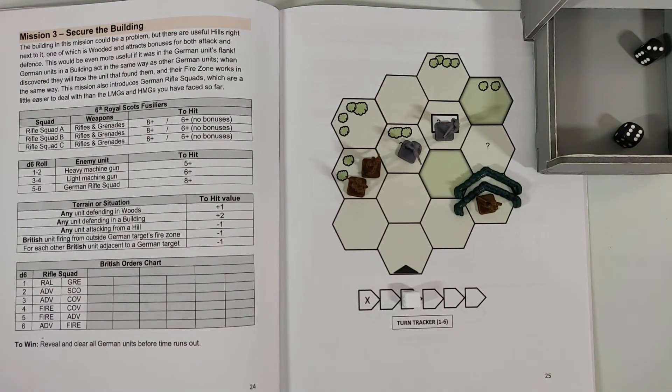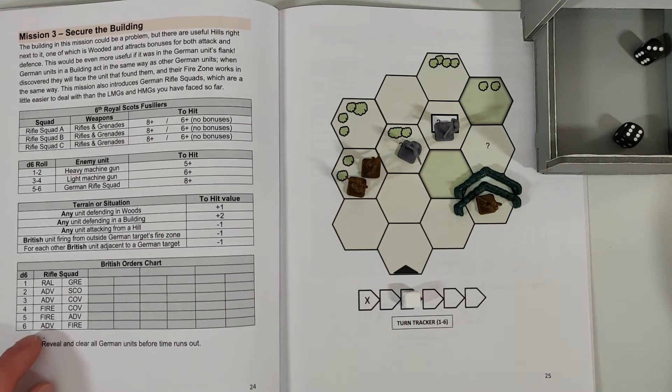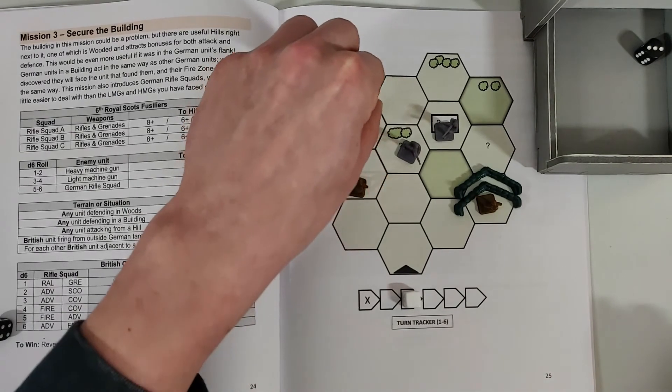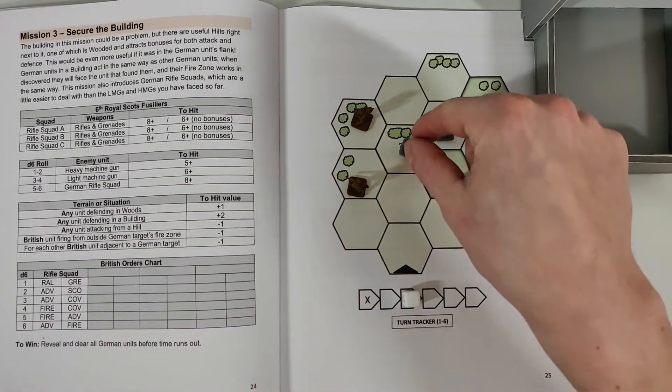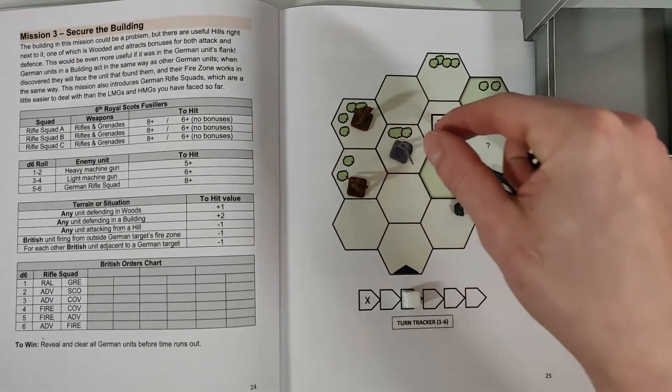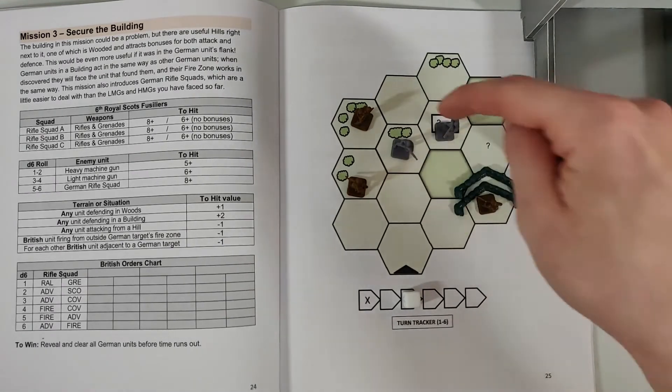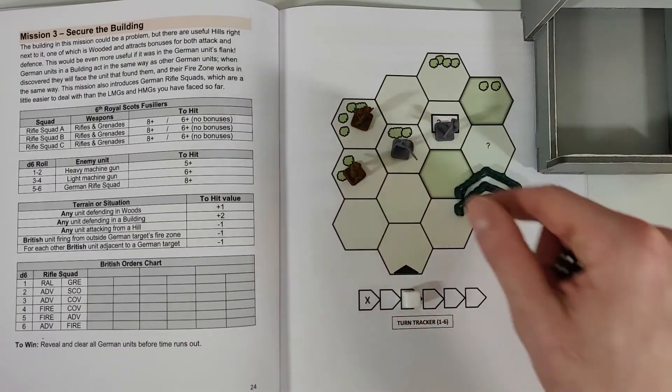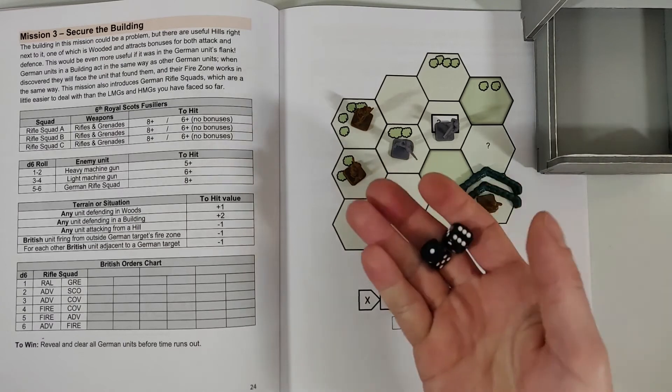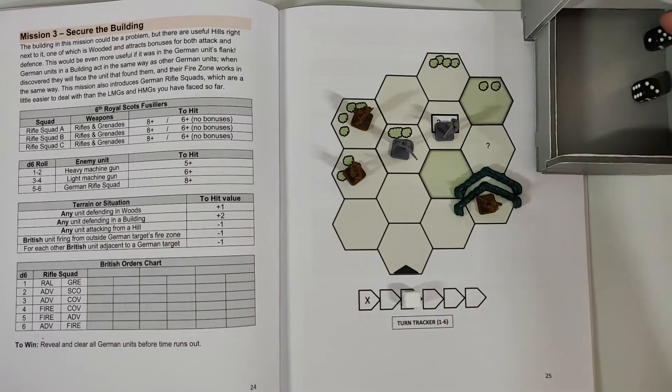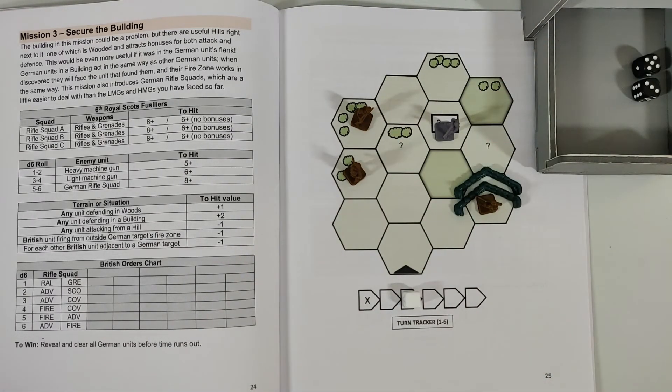Okay, so we have rifle squadrons B and C left. We roll nine - oh sorry, six and three. So we're gonna use six, which is advance and cover. So this guy is advancing, then he's firing upon this squadron. I need eight to hit, although this guy is hiding in the woods, so that eight is gonna turn into a nine. But luckily I'm flanking, so that nine turns into an eight again. And then because I have fire support from here, that's gonna turn into a seven. So I need a seven or higher to destroy that German unit. And I roll eight, so I've successfully managed to take out this last German soldier.